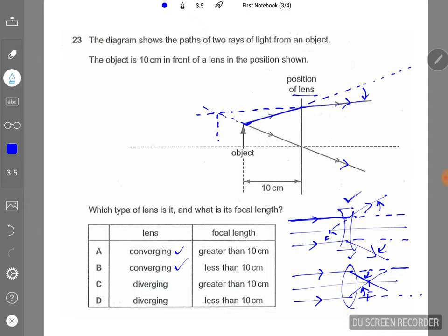And when they converge, this will be the position of the virtual image formed. So the characteristic will be virtual, it will be magnified, and it will be upright.